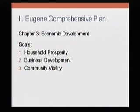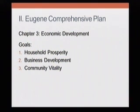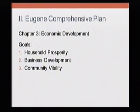Chapter three is about economic development. The commission saw the policies previously in December. This is a lengthy chapter due largely to Oregon administrative rules that relate to planning for land supply and different types of land for jobs. The three goals for economic development are: household prosperity, business development, and community vitality.